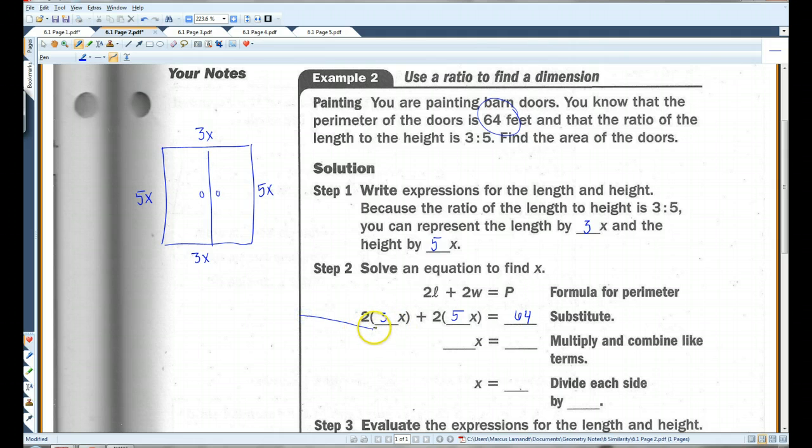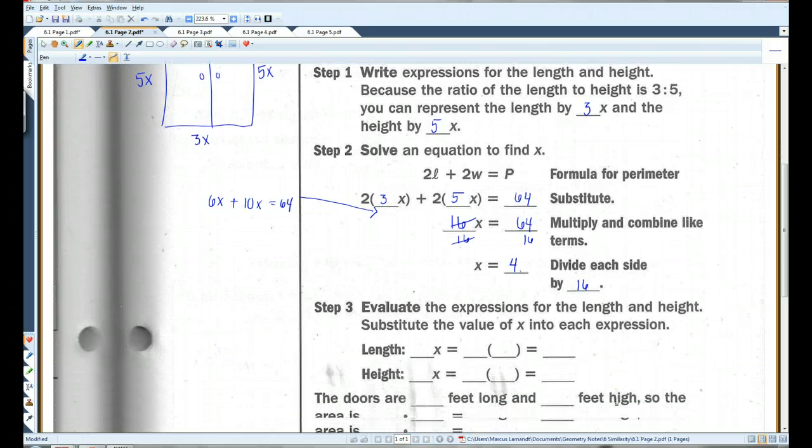I'm going to add a step in here. They don't give enough room for it. 2 times 3 is 6, 2 times 5 is 10. So this is what we have. 6x plus 10x is 16x. I'm going to divide both sides by 16. These 16s cancel out. x equals 4. I divided each side by 16.